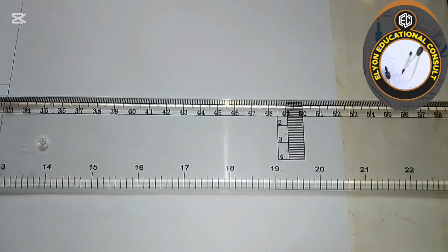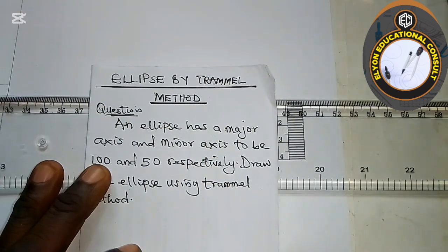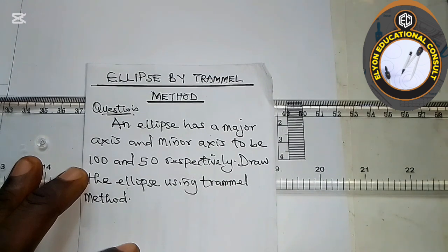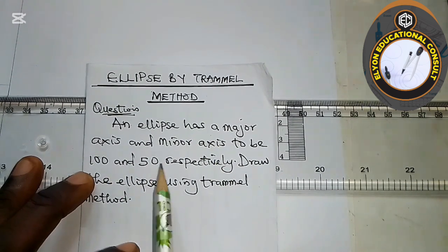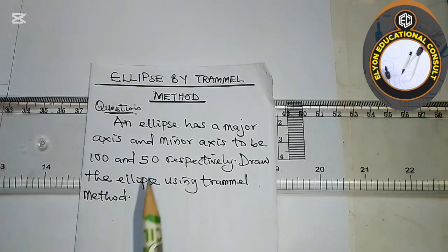They are very simple and easy to draw, but in this video we are going to be drawing an ellipse using another method — the trimel method. This is a very quick and interesting way of drawing an ellipse. We have a question: the question says an ellipse has a major axis and minor axis of 100 and 50 respectively. Draw the ellipse using the trimel method.